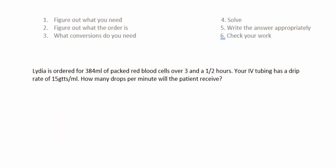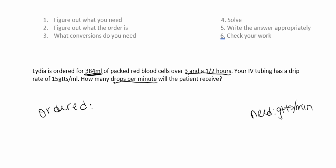Lydia is ordered for 384 mL of packed red blood cells over three and a half hours. Your IV tubing has a drip rate of 15 drops per mL. How many drops per minute will the patient receive? First things first, what do we need? We need drops per minute. Now what's ordered? We have 384 mL over 3.5 hours. We know we're going to need one hour equals 60 minutes, and we know we're going to need 15 drops per mL. So let's go ahead and solve.